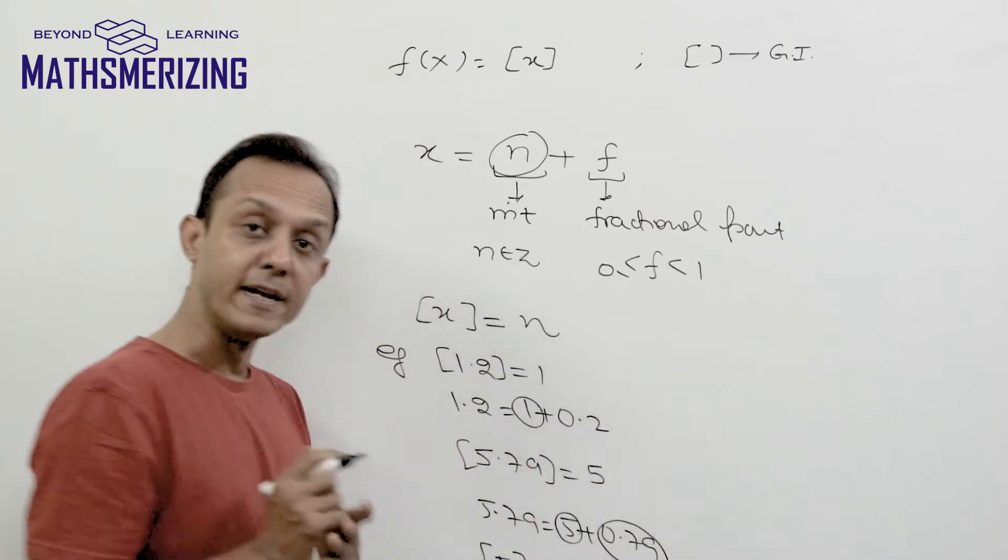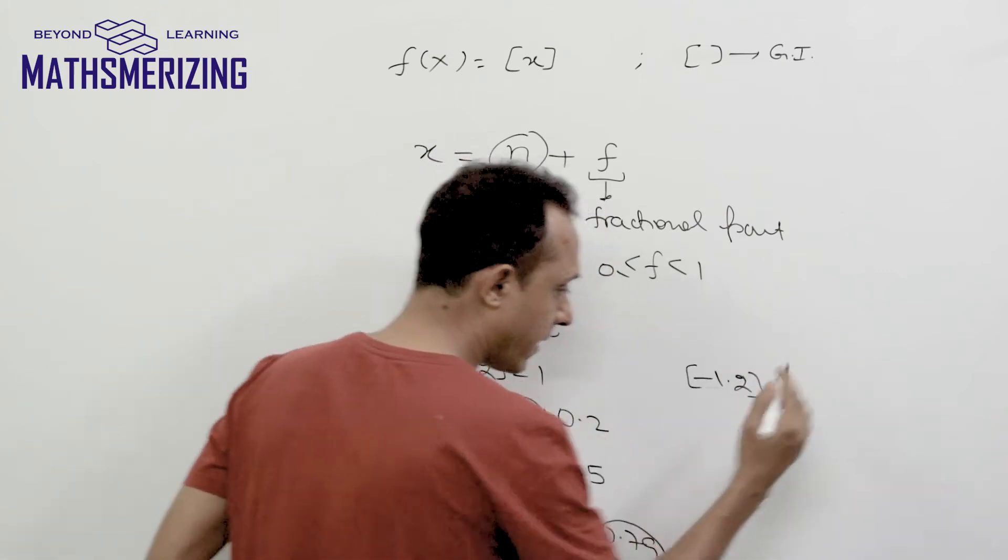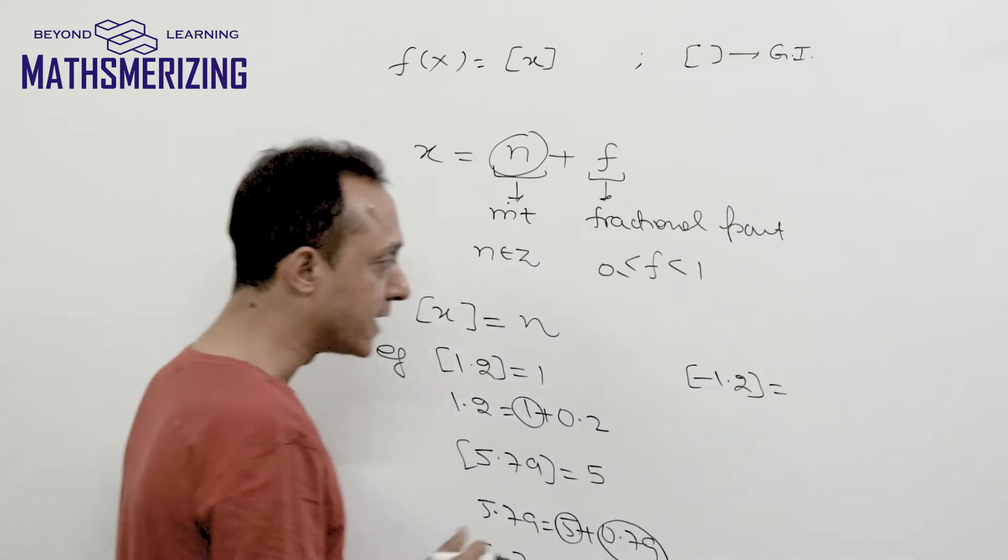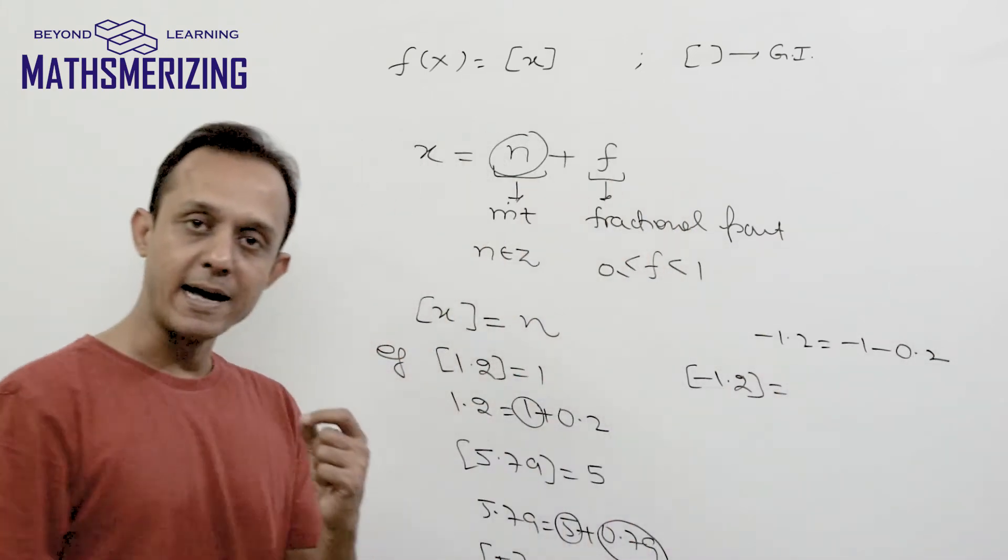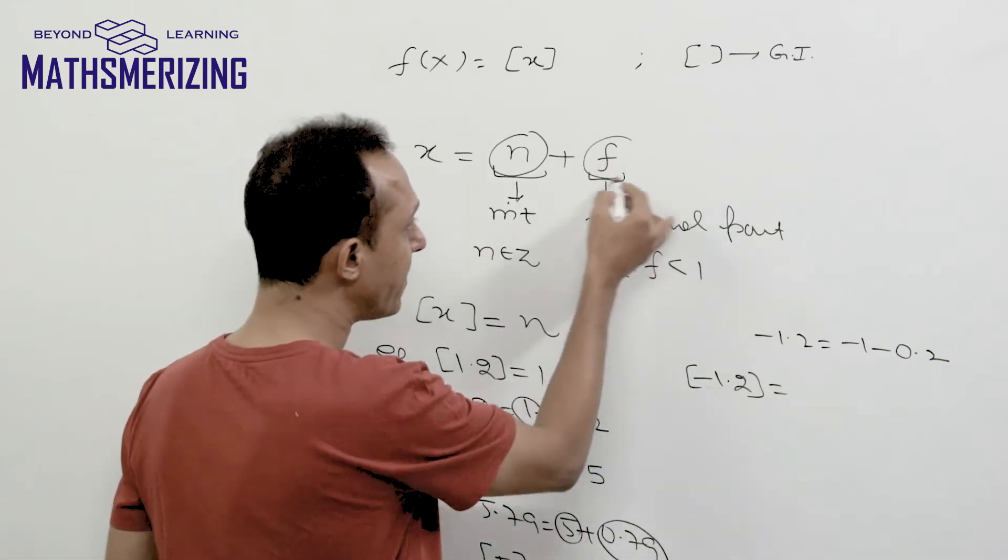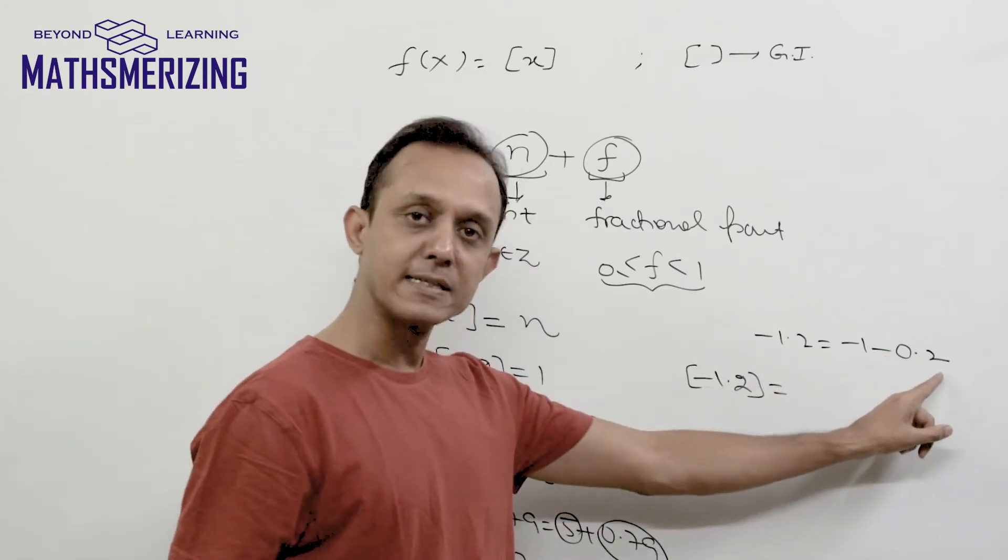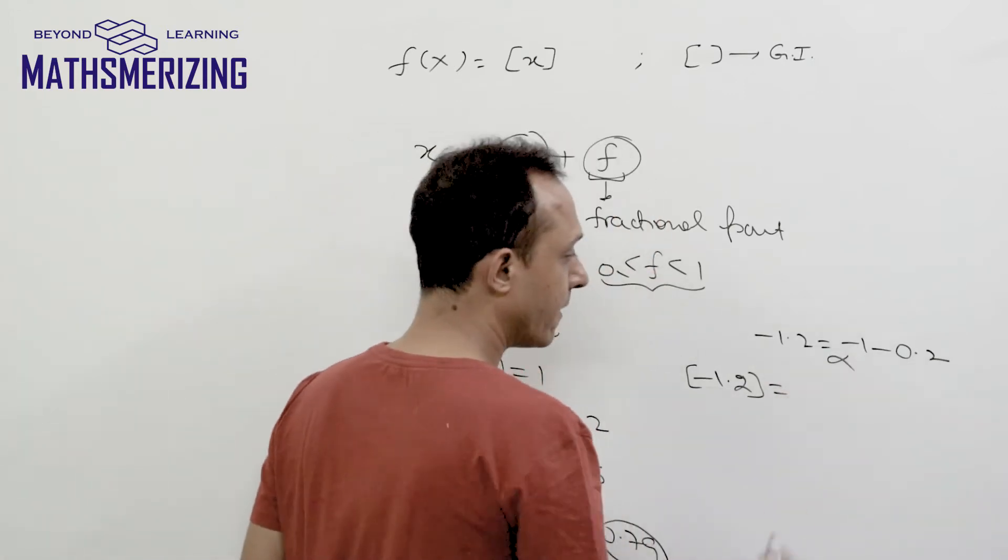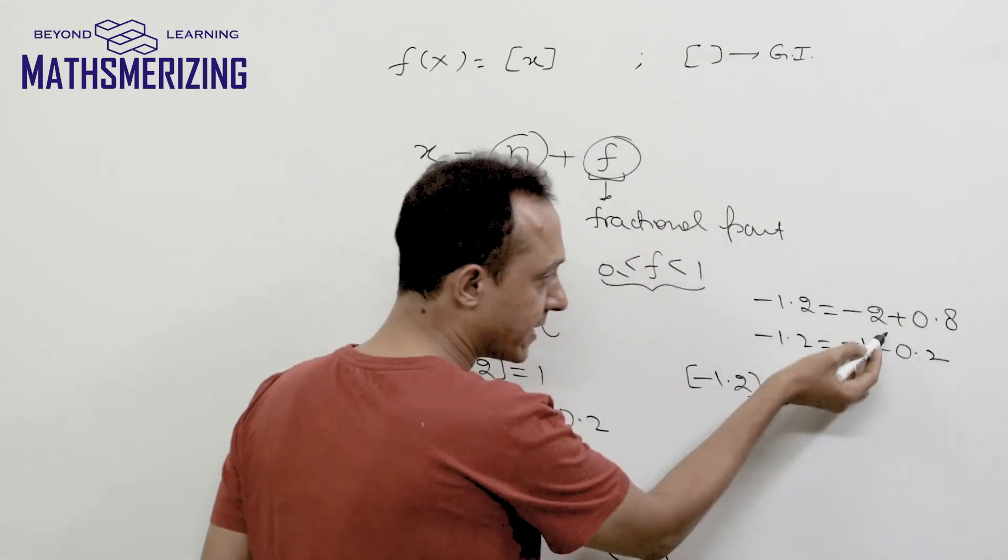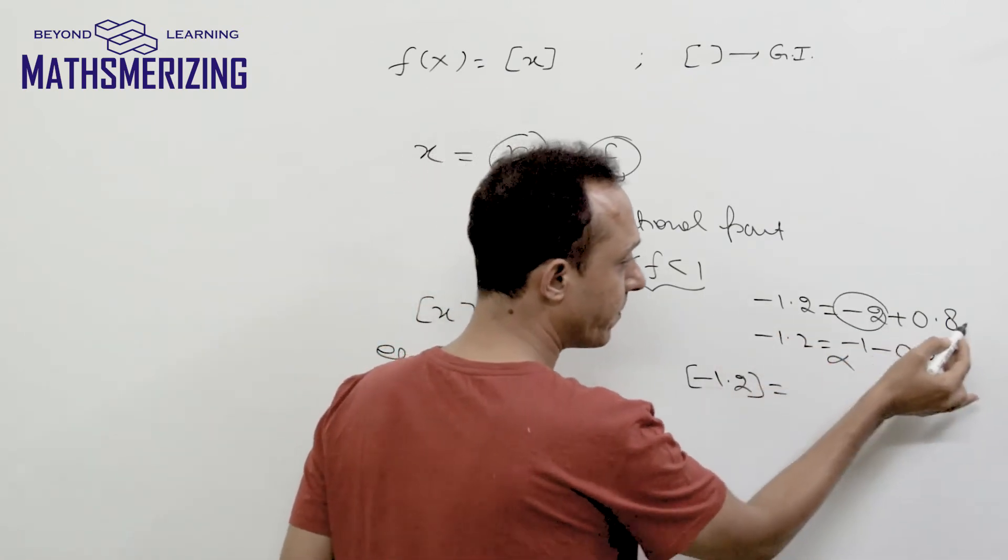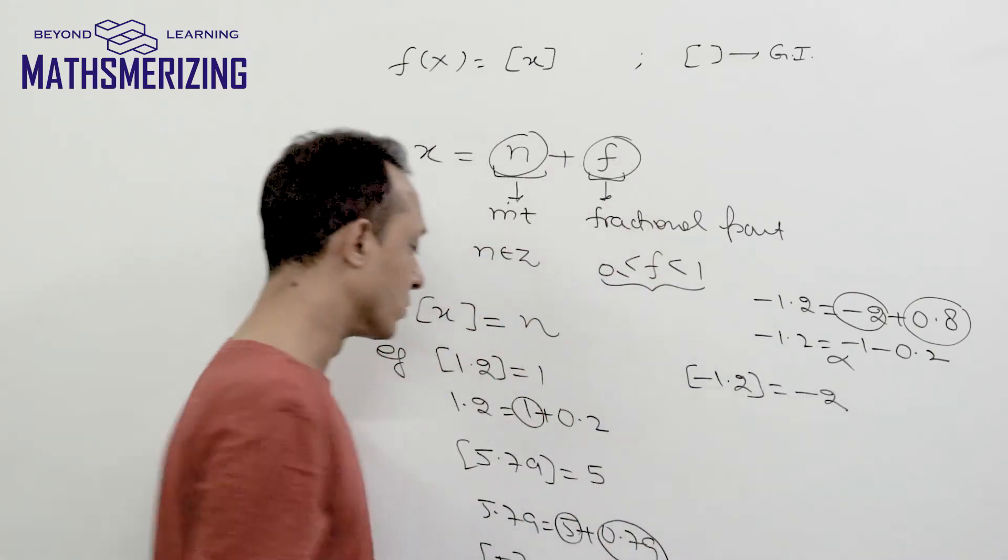What if I have negative numbers? For example, suppose I have to find greatest integer function of -1.2. Now -1.2 I can write as -1 minus 0.2, but here I have a problem. The fractional part f should be a positive number lying between 0 and 1, and here I'm getting a fraction which is negative. So rather than expressing it this way, we actually express -1.2 as -2 plus 0.8. That's the correct way. So its integral part is -2 and its fractional part is 0.8. Therefore, greatest integer function of -1.2 is simply -2.